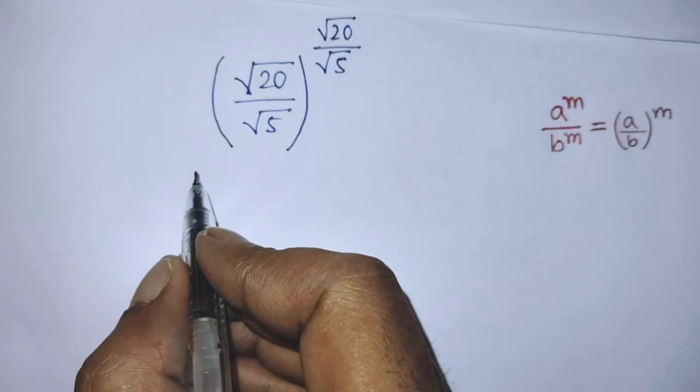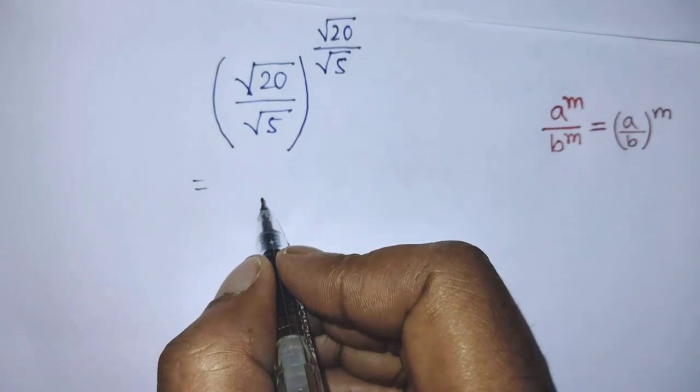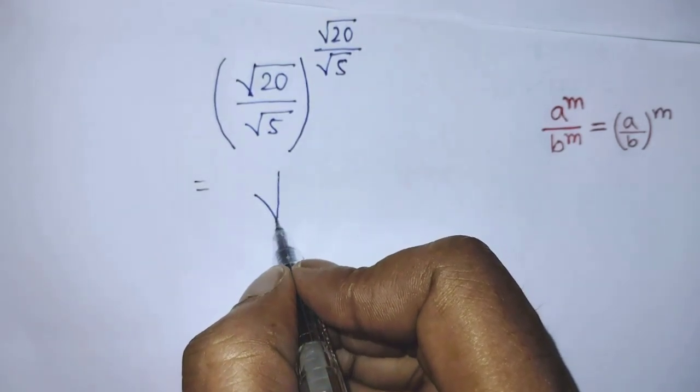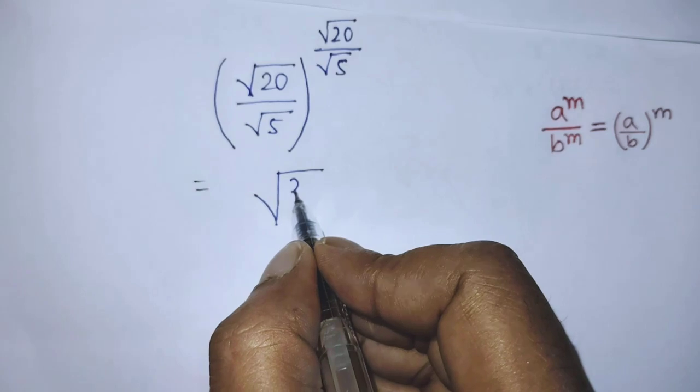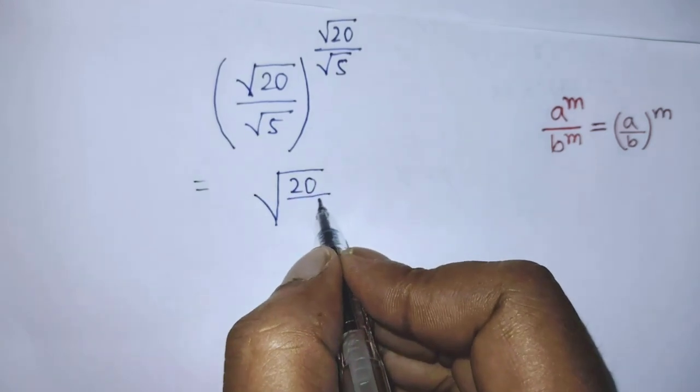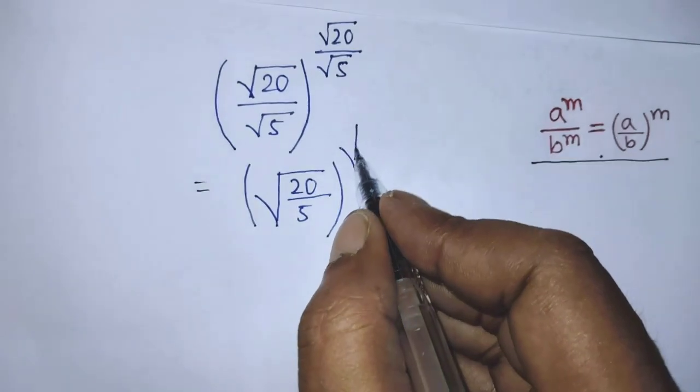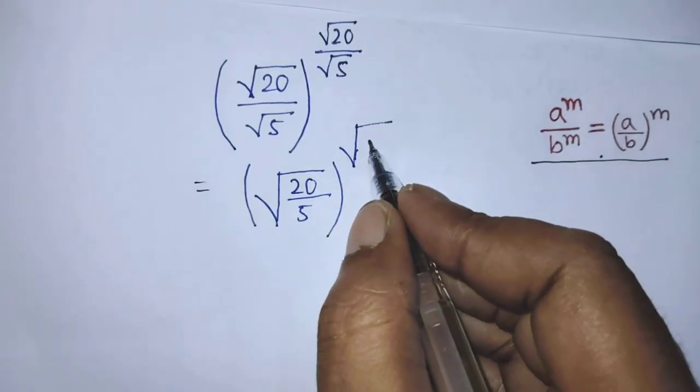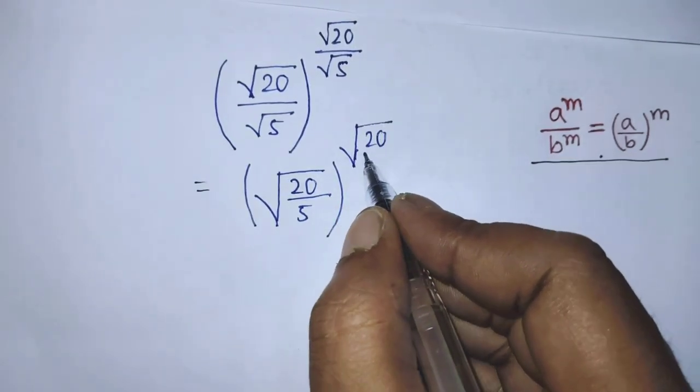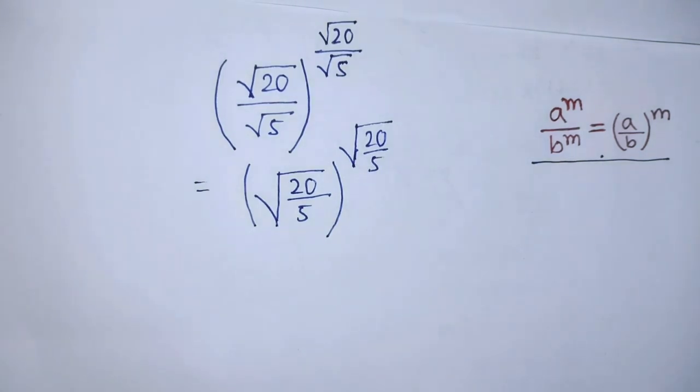Square root of 20 over 5, whole to the power square root of 20 over 5. Then it will be square root of 4, whole to the power square root of 4.